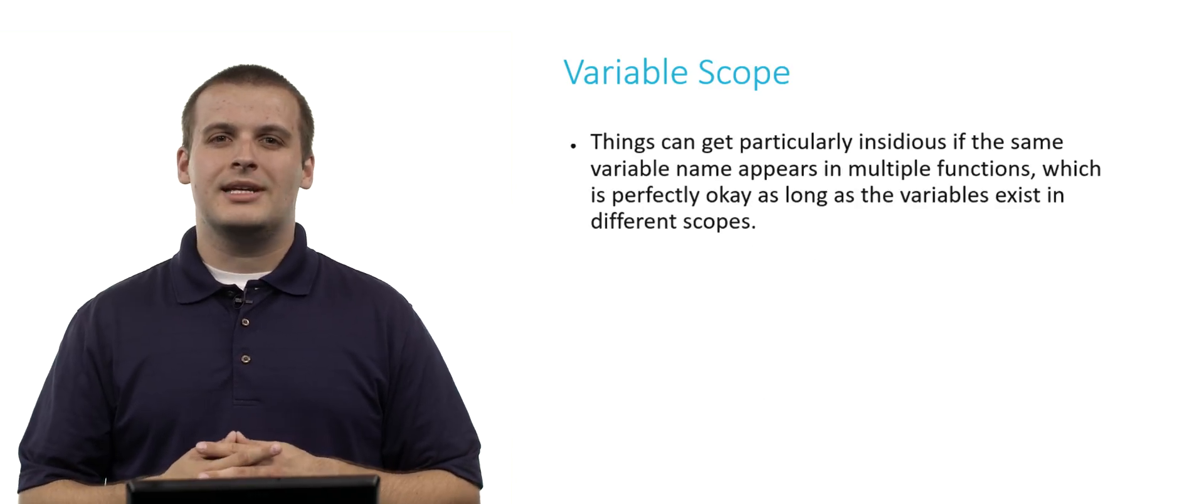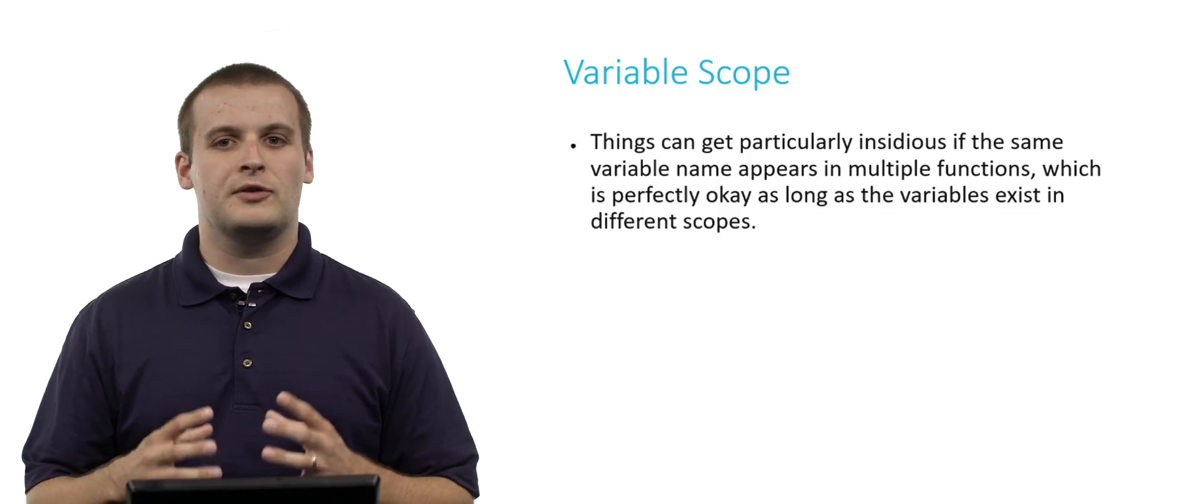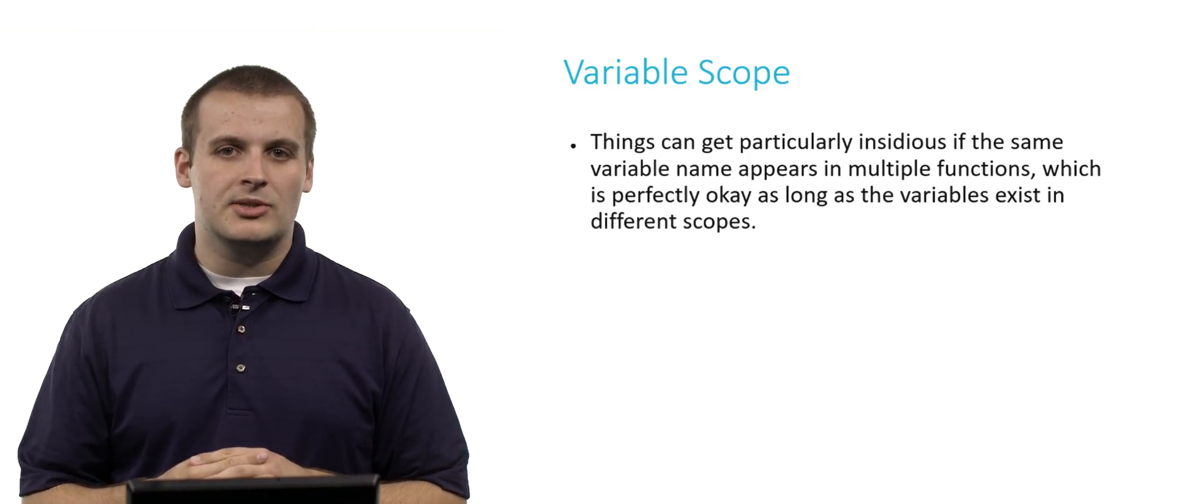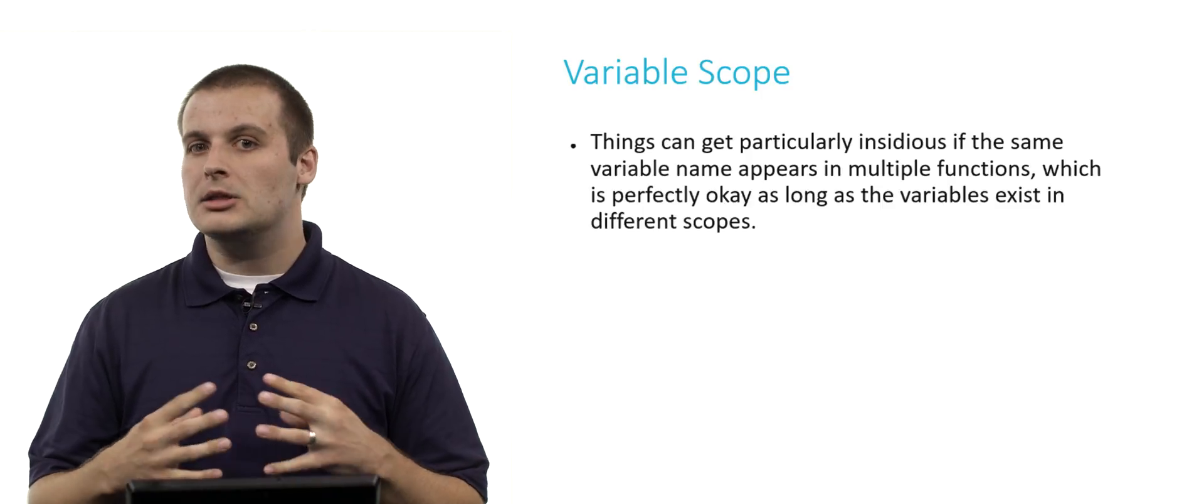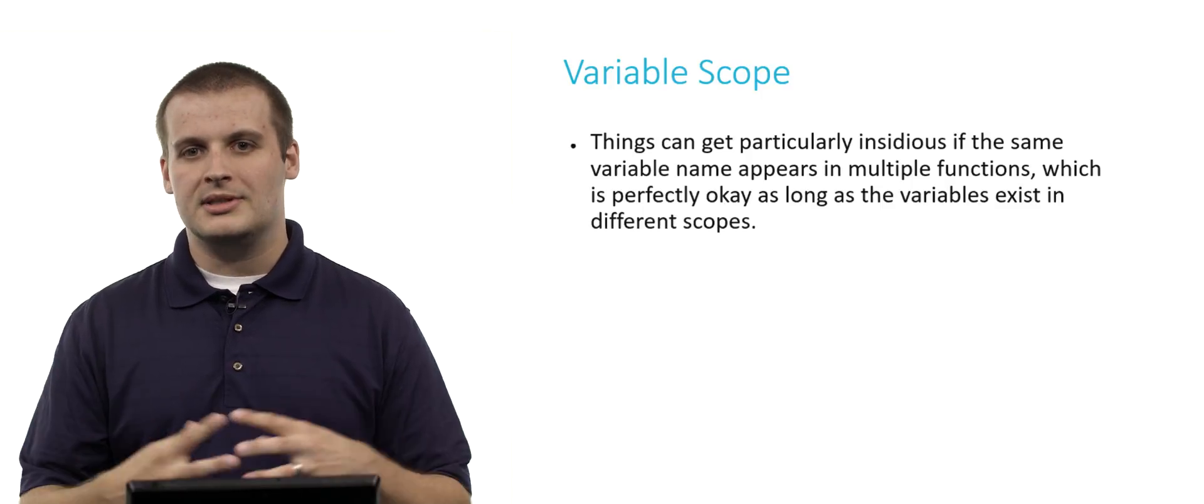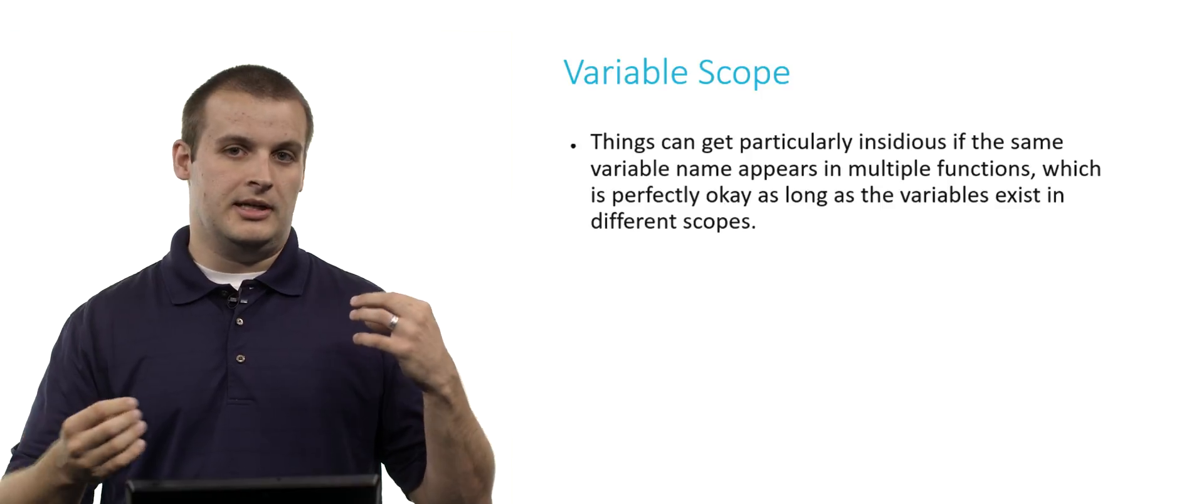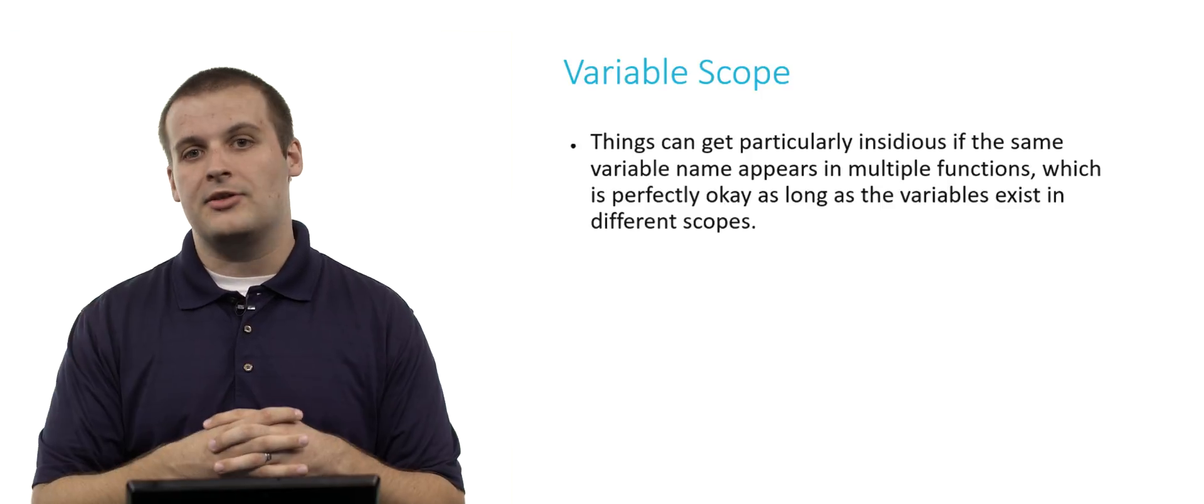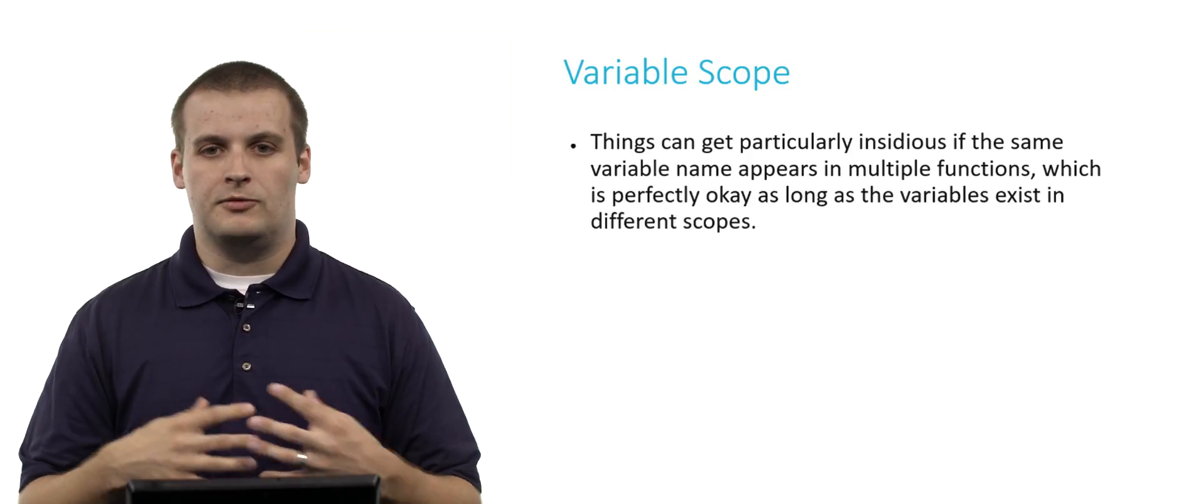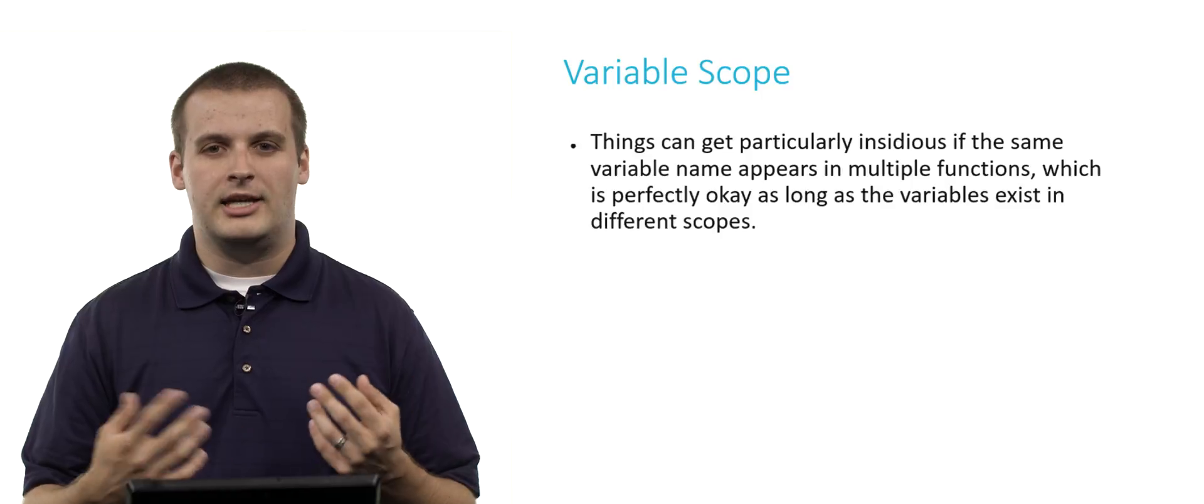Variable scope is generally not too much of a problem if you name all of your variables different things. But it can get kind of nasty if the same variable name appears in multiple functions, which will happen a lot. If you ever do work in the real world where you are working on collaborative programs and people in different teams are working together to write the same program or the same set of programs, they'll frequently reuse variable names, particularly common ones like x, y, i, j, and so on.